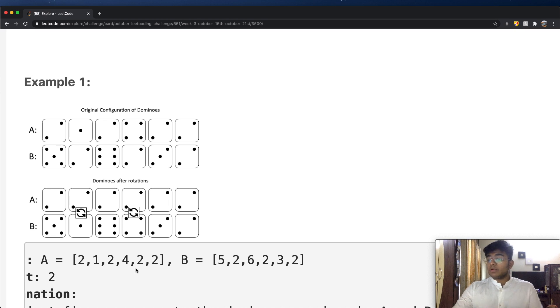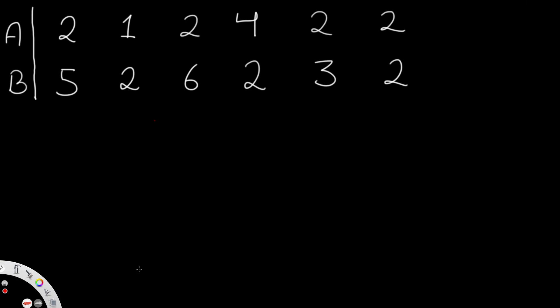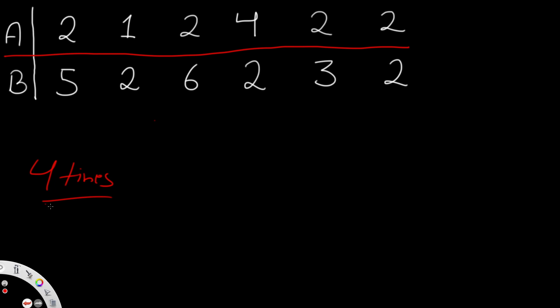Let's look at the example step by step. Everything above the red line is the A value and everything below is the B value. So we have 2 and 5 on either side of a domino. The goal is that we want one row completely filled with the same number. To reach that goal, we're going to iterate through our dominoes four times. The goal for now is to make everything in row A the same number.